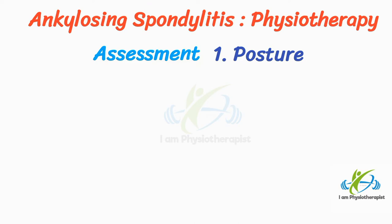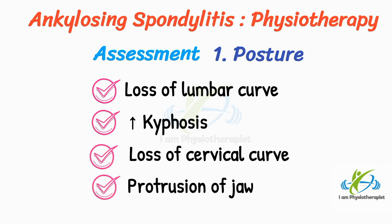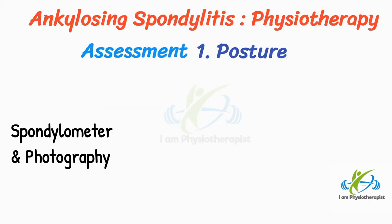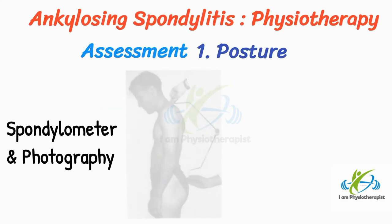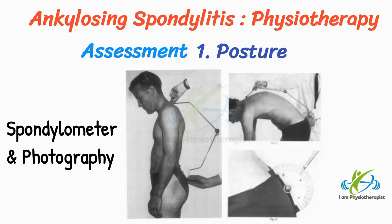Posture assessment: Posture deviation occurs mainly in the anteroposterior direction. In ankylosing spondylitis there is loss of lumbar curve, increased kyphosis, loss of cervical curve, and protrusion of jaw. Methods used to assess posture include the spondylometer or photography. The spondylometer consists of an upright wooden post mounted at right angles to a wooden platform forming the base; the patient steps onto the platform and a spinal profile is recorded by plotting on graph paper at six-month intervals.